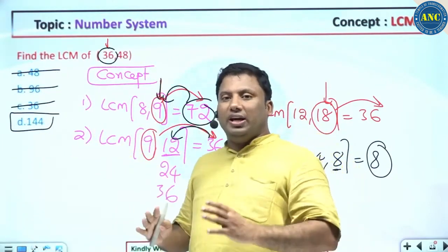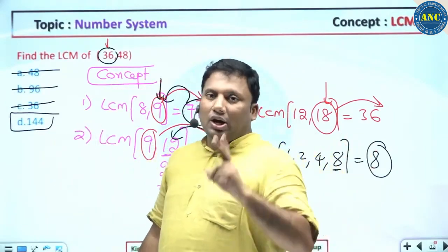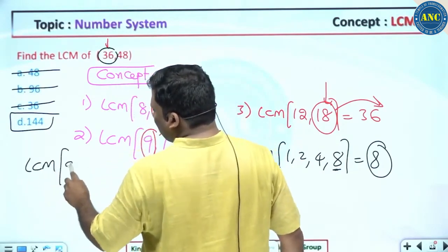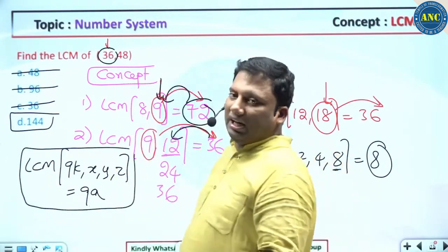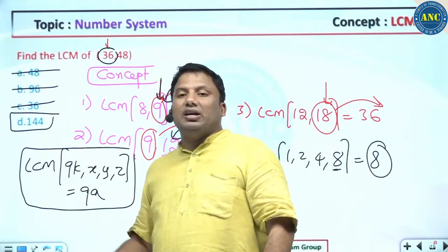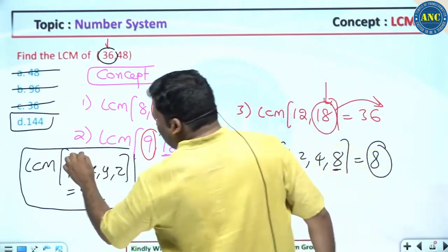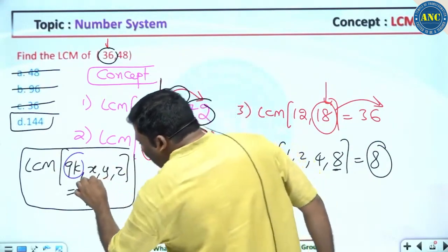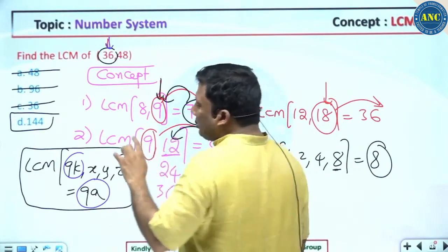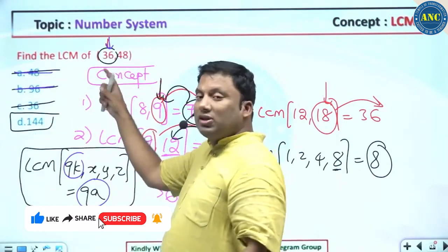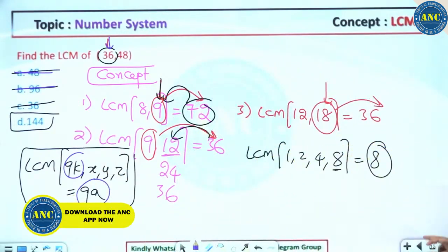Even if you do not know the definition and properties of LCM, if you understand the root cause of a problem you can still get the answer. Two learnings: first, if one input number has a digital sum of 9, the LCM answer's digital sum will also be 9. Second, LCM is always greater than or equal to the largest number. So for LCM of 36 and 48, the answer cannot be 36 — it is 144.